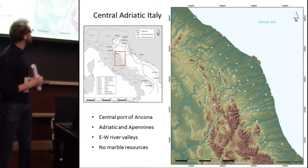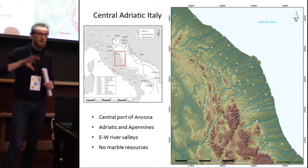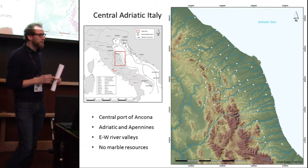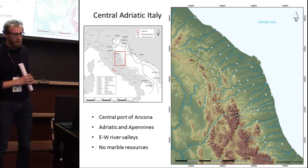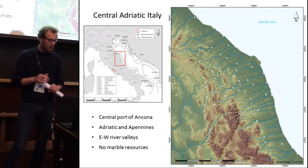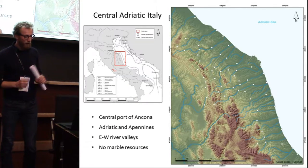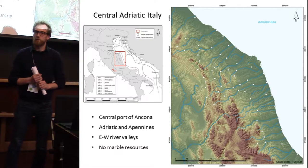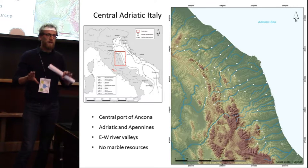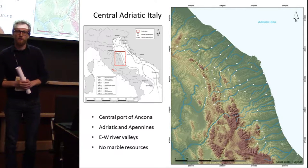The geomorphology of the terrain is such that on the western side we have the Apennine Mountains, and on the eastern side we have the Adriatic. Both are linked by a series of parallel rivers. However, geomorphological and geoarchaeological studies have shown that none of these rivers in Roman times could be navigated. So all transport in the area — all import and export — had to occur over land.